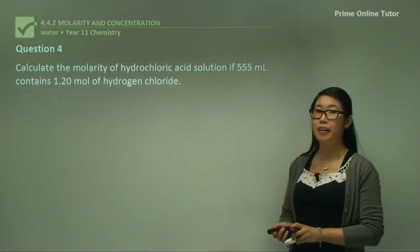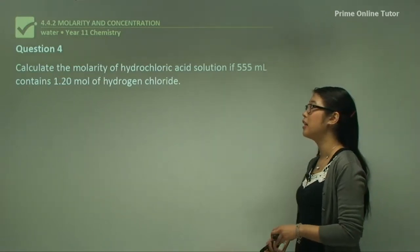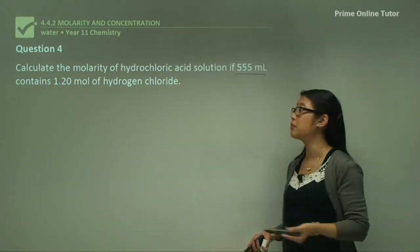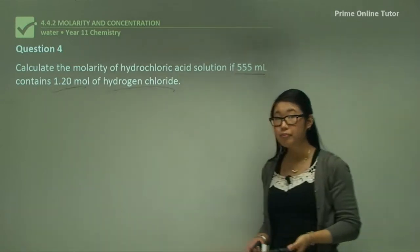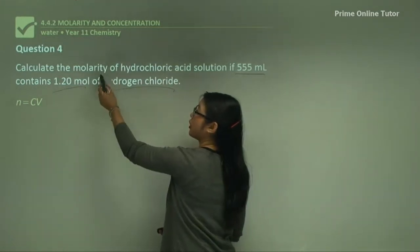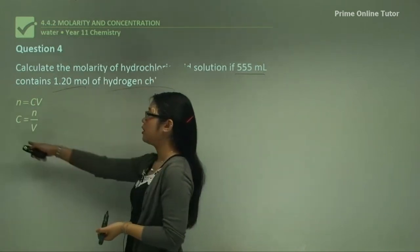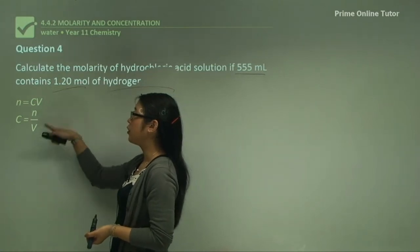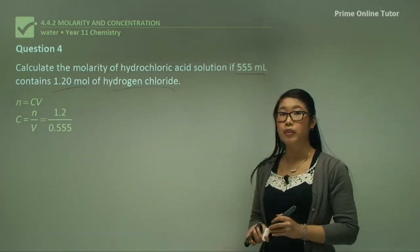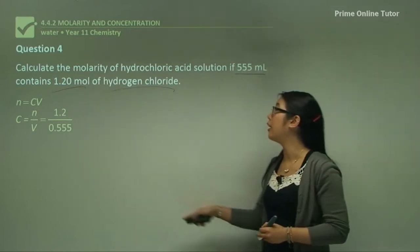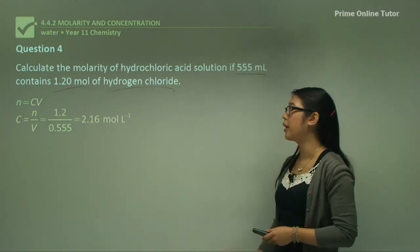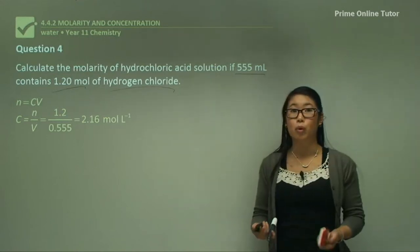Question 4: Calculate the molarity of a hydrochloric acid solution in 555 mL containing 1.2 moles of hydrogen chloride. Using C equals N over V: N is 1.2 moles, and V is 555 mL converted to 0.555 litres. C equals 1.2 divided by 0.555, giving 2.16 moles per litre.